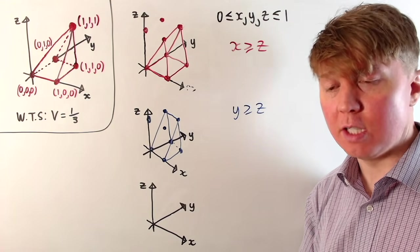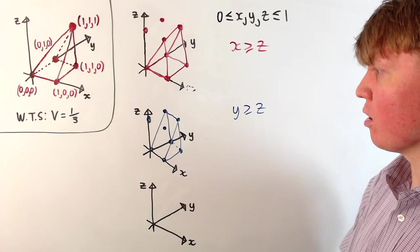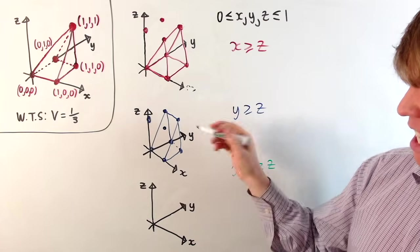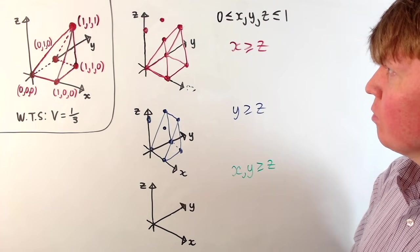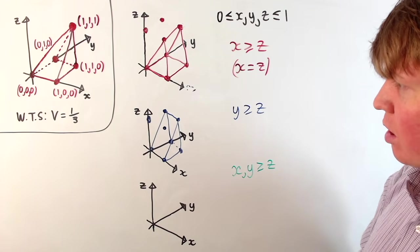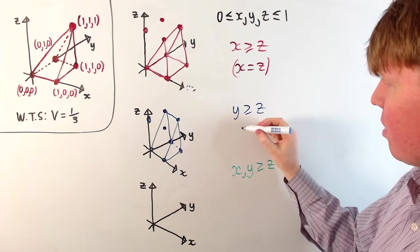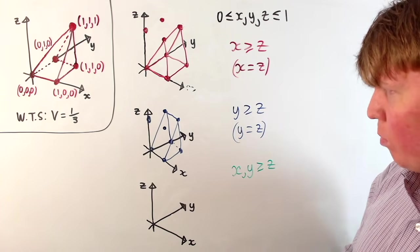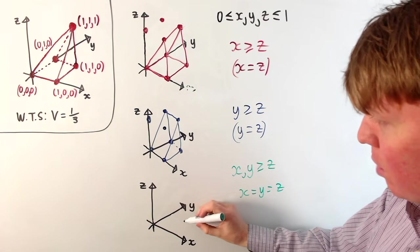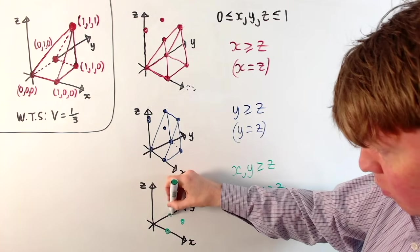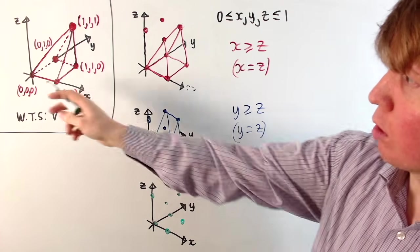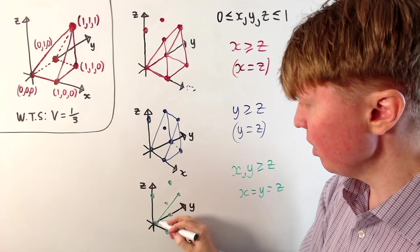It turns out that the intersection of these two regions gives us our pyramid shape. If we write x and y are both greater than or equal to z, we can think of the plane x equals z cutting the cube in half, and the plane y equals z cutting the cube in the other direction. The intersection of these two planes is the line x equals y equals z, which goes from (0,0,0) up to (1,1,1) — the diagonal of the cube, and this is our first edge of our pyramid.